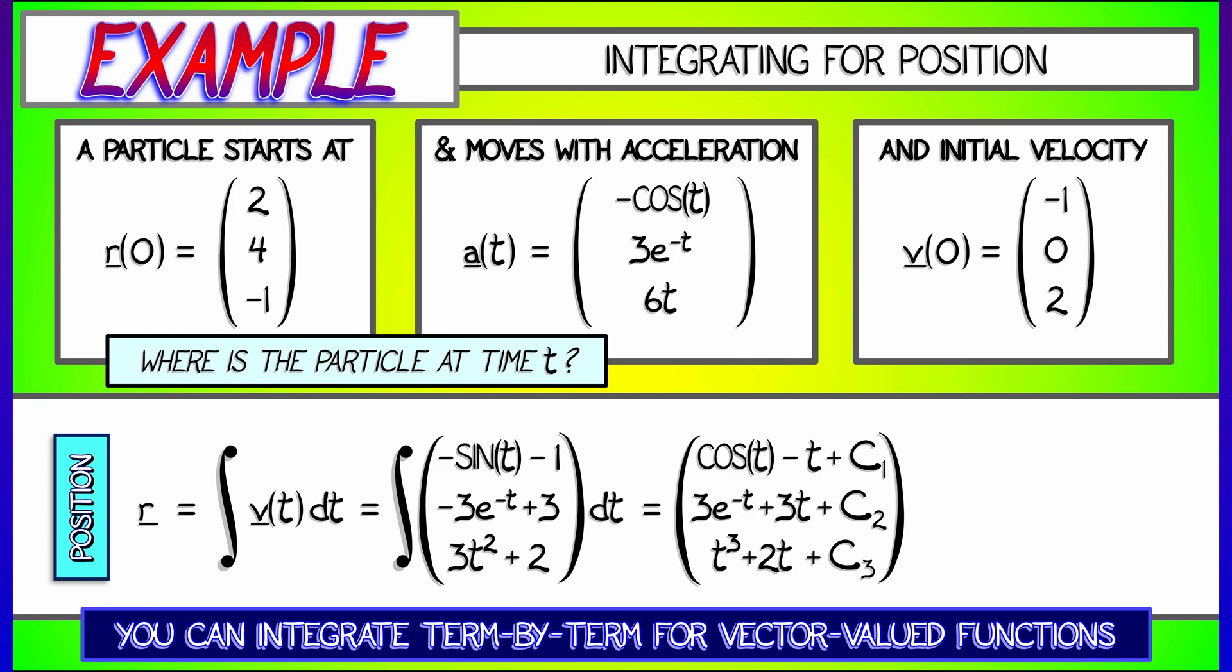These are, of course, different c's than the previous integration. How do we solve for these? We're going to take the initial position r0, that is 2, 4, negative 1. We're going to set each term equal to the corresponding initial position, solve for each of these three constants. When we do so, we get that these constants are, respectively, plus 1, plus 1, and minus 1. That gives us our final answer for what the position is.